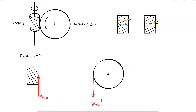Even though the force from the worm to the gear is labeled as the tangential force because it is tangential, the direction of the reaction W_GW is parallel to the axis of the worm, which means that the axial component of the force on the worm is equal to the tangential component of the force on the worm gear.